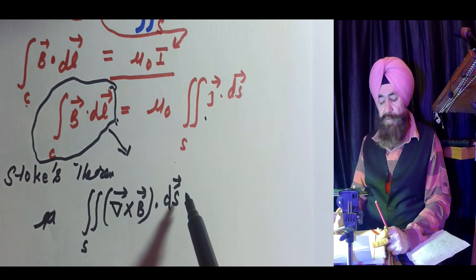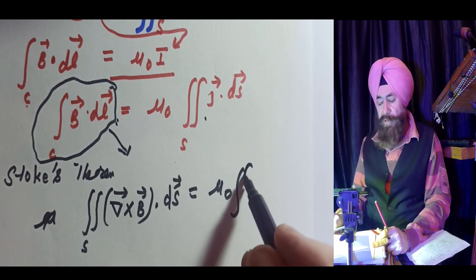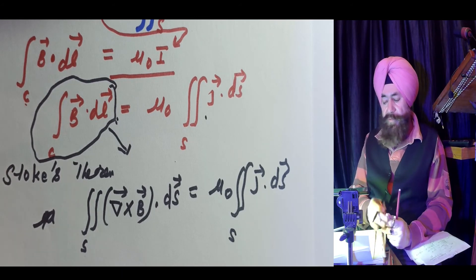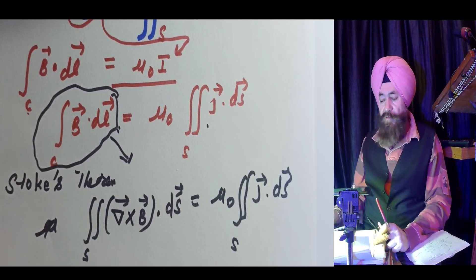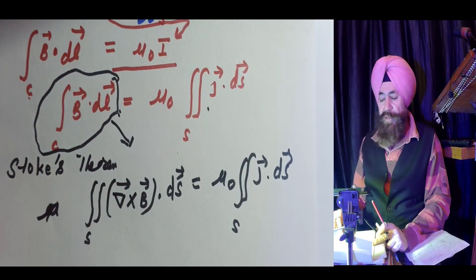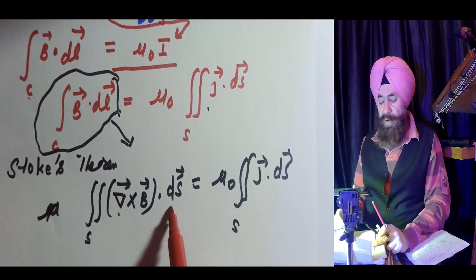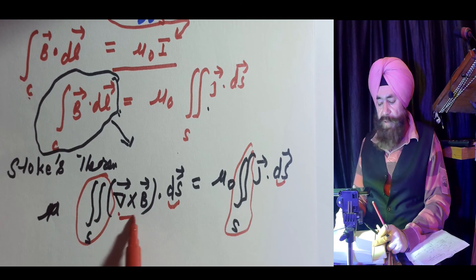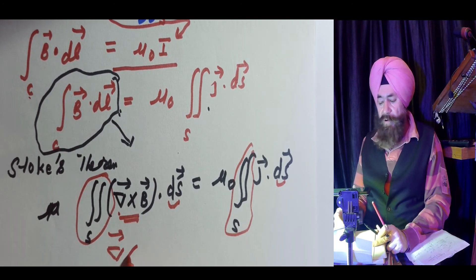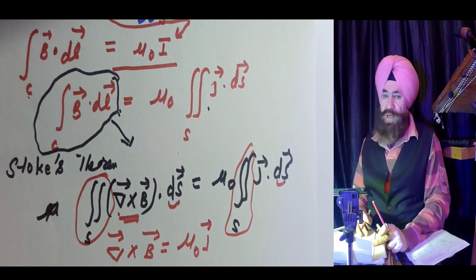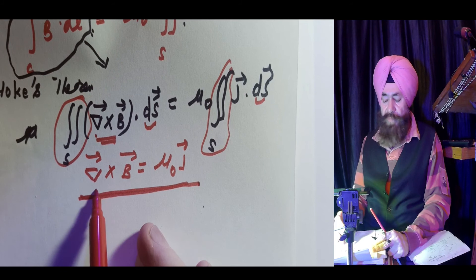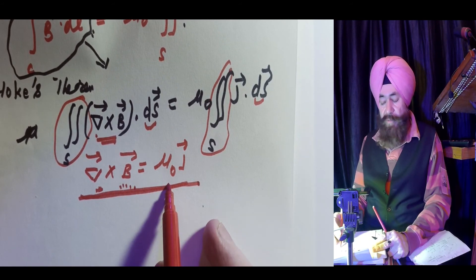Since both sides are now surface integrals over the same surface, it follows that curl of the magnetic field equals μ₀J. This equation is known as Ampere's law in differential form, and curl of the magnetic field equals μ₀ times the current density.